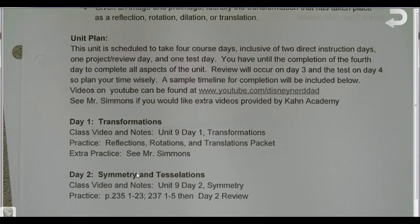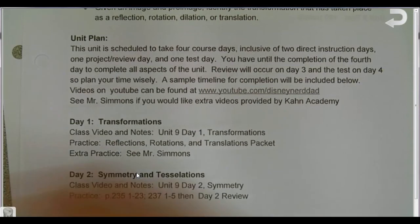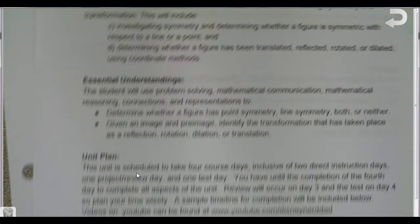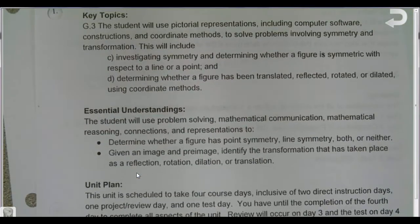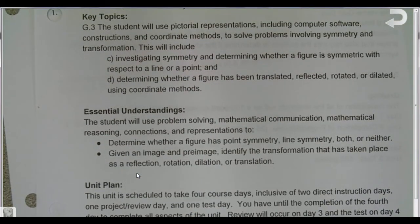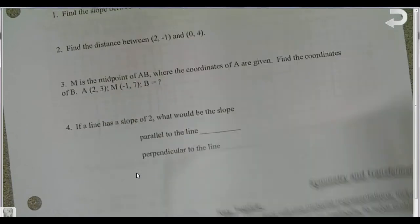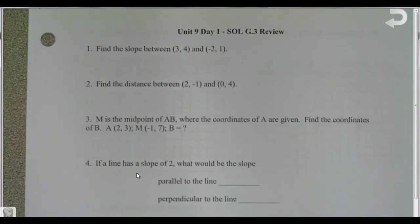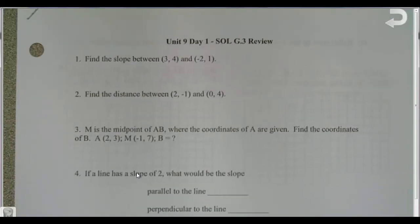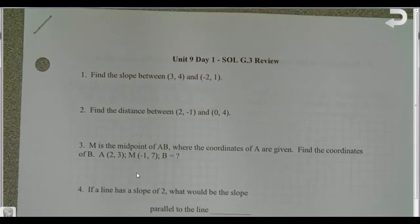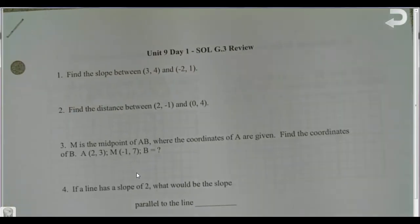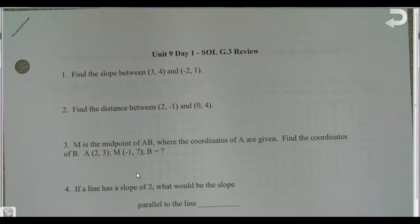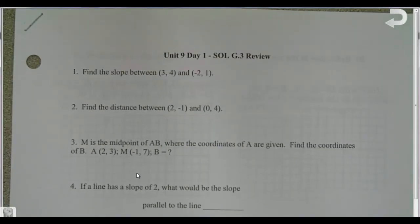Okay, so we're on day one of unit nine — we're going to talk about transformations. The SOL that we're looking at is G.3, which covers slope, the distance formula, and the midpoint formula. The first thing I want to do is write these formulas up at the top of the paper so that you guys have something to go off of.